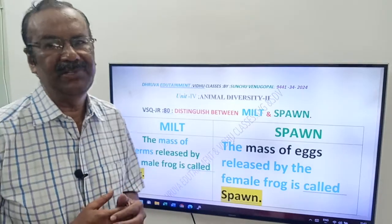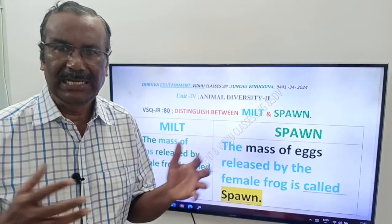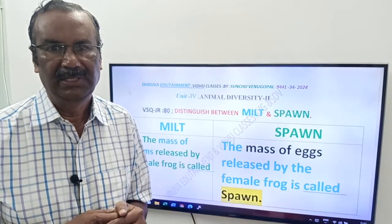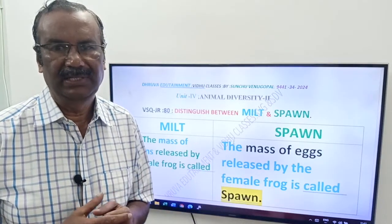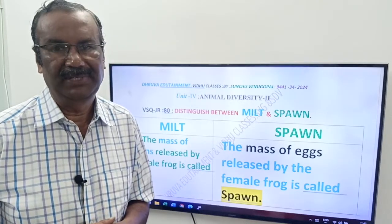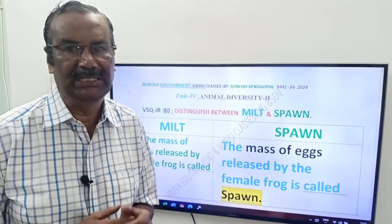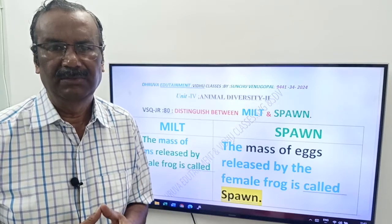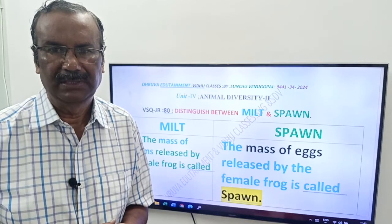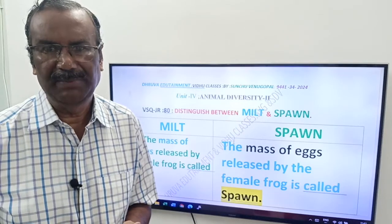During breeding season, male and female frogs release a mass of eggs and sperms. The mass of eggs released by the female frog is called Spawn. The mass of sperms released by the male frog is called Milt. Frogs are unisexual animals — males release sperms, called male gametes; females release ova, called female gametes.